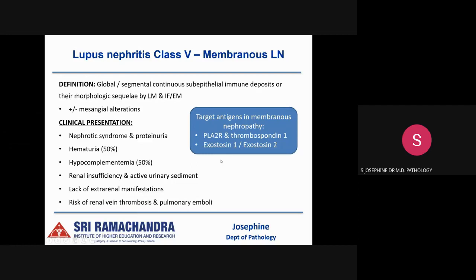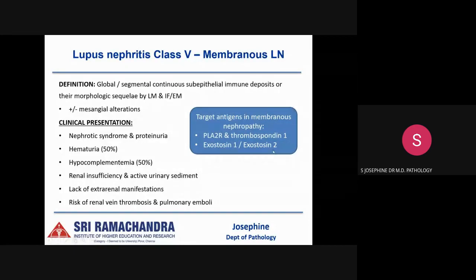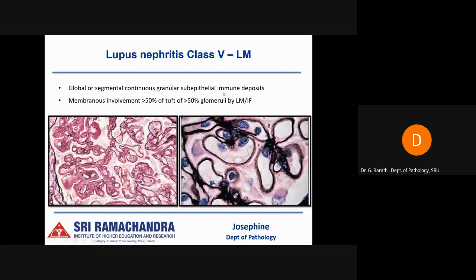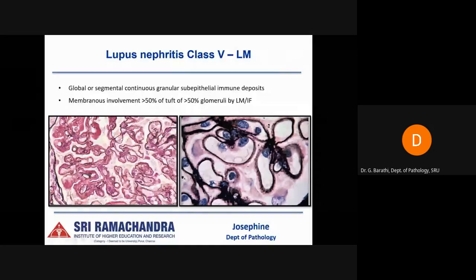In membranous nephropathy, PLA2R and thrombospondin type 1 are the most common target antigens, accounting for around 70% and 20% of primary membranous nephropathy cases respectively. A new antigen, exostosin 1 and exostosin 2, detected by immunostaining and mass spectrometry, has been identified in lupus-associated membranous nephritis. Lupus nephritis causing membranous is always a secondary lesion, where exostosin 1 and 2 are the identified antigens.